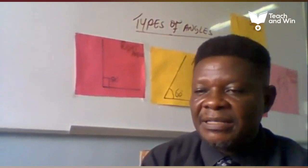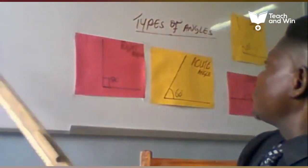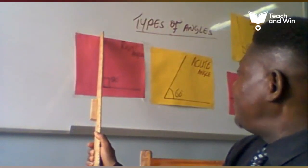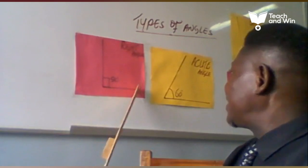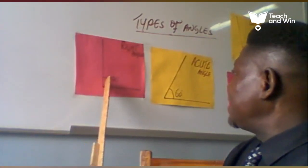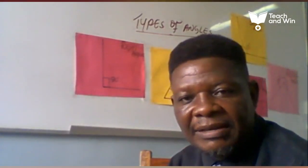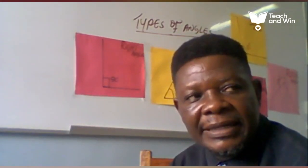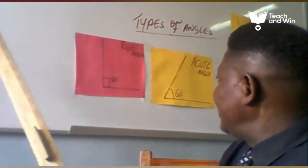There are different kinds of angles and different types of angles. When the vertical straight line joins a horizontal straight line, an angle is formed and that angle is called the right angle. The value of the right angle is 90 degrees.